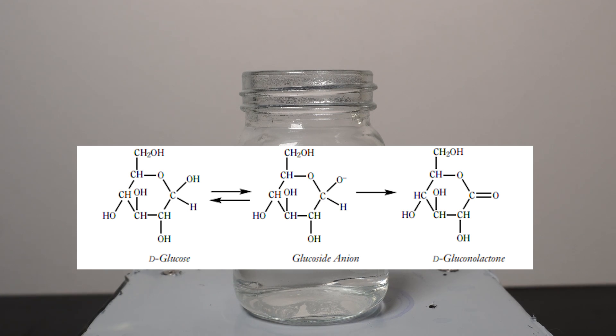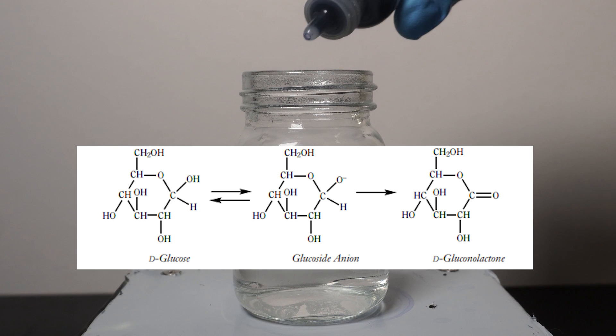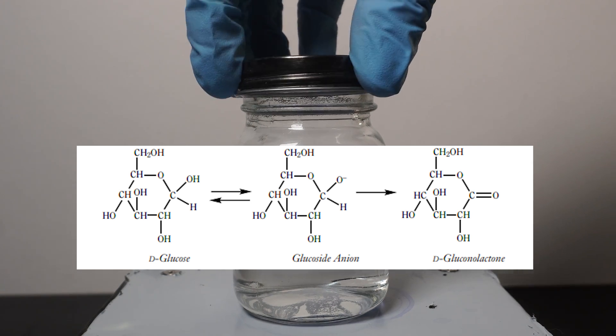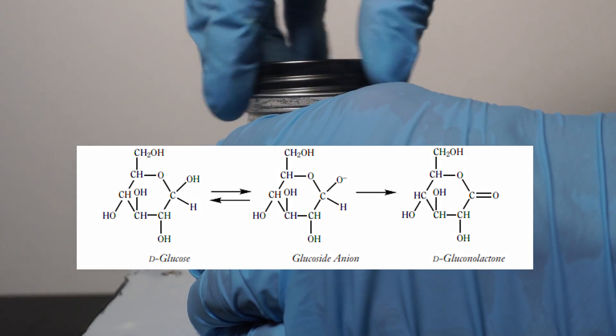Hydroxides such as potassium hydroxide are great oxidation agents. When glucose is oxidized by the potassium hydroxide, it undergoes an acid-base reaction to change into the glucoside anion. From here, the glucoside anion is oxidized into gluconolactone.